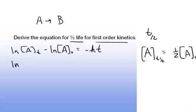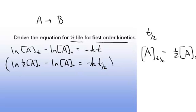Alright, so the natural log of one-half A-naught, minus the natural log of A-naught, equals negative kT one-half. I can divide the equation through by negative one over k.